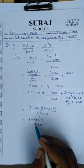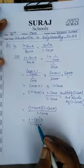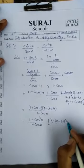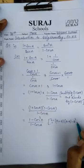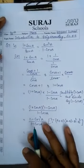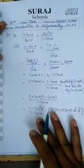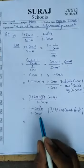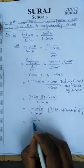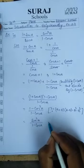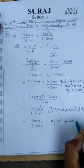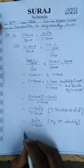So we have A squared minus B squared because A plus B into A minus B equals A square minus B square. Now, by the first identity, 1 minus cos squared A equals sin squared A. So we get sin squared A upon 1 minus cos A, which is our RHS.